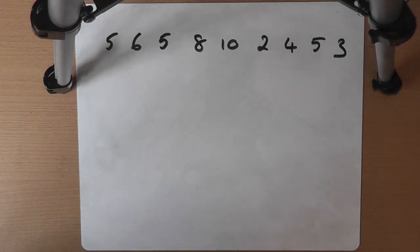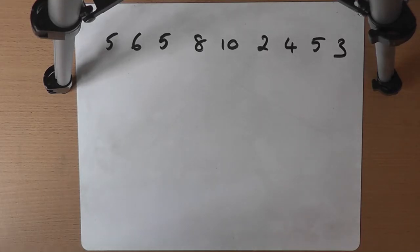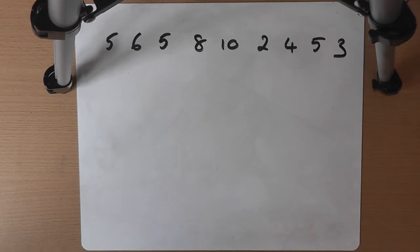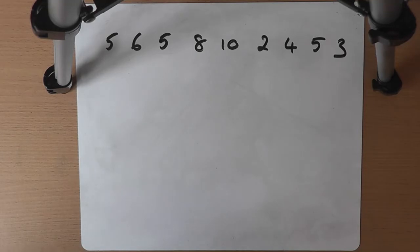Here is a list of numbers: 5, 6, 5, 8, 10, 2, 4, 5, and 3 — 9 numbers. Now these numbers are a set of data. Perhaps they're data from somewhere, perhaps it's just a list of numbers. It doesn't really matter either way.